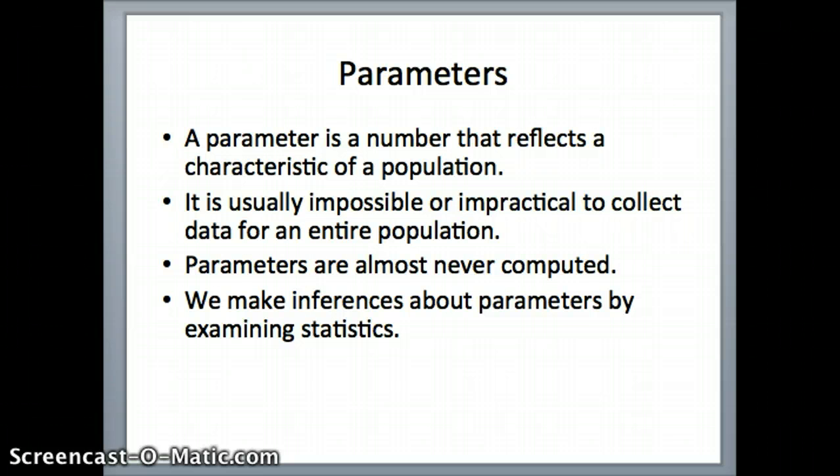That large set of data is called a population, and a parameter is a number that reflects a characteristic of that population. So the population could be all U.S. citizens, and a parameter could be the average height of all U.S. citizens. Now understand, that is impossible or impractical to collect that sort of information.